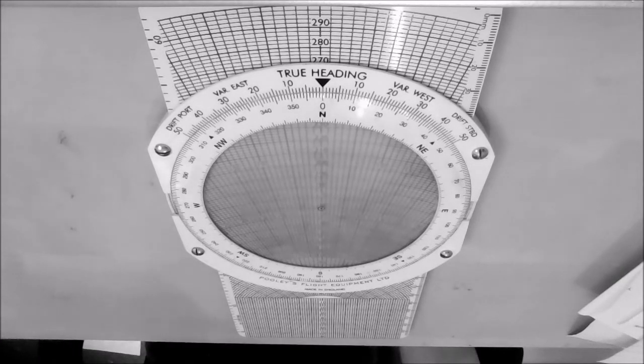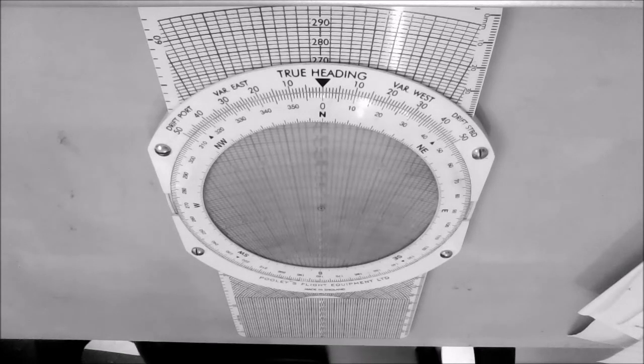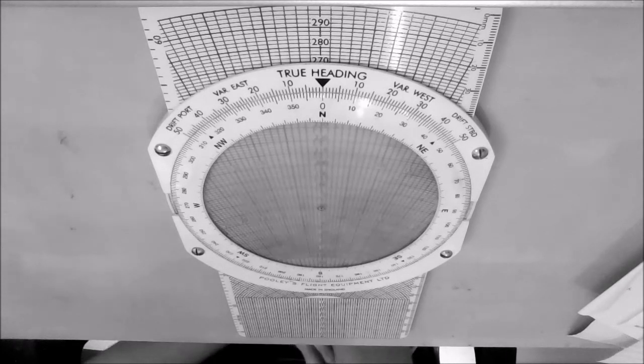What we have is a true track of 095 degrees, TAS of 160 knots, true heading of 087, and ground speed of 130 knots, and it wants us to calculate the wind velocity.